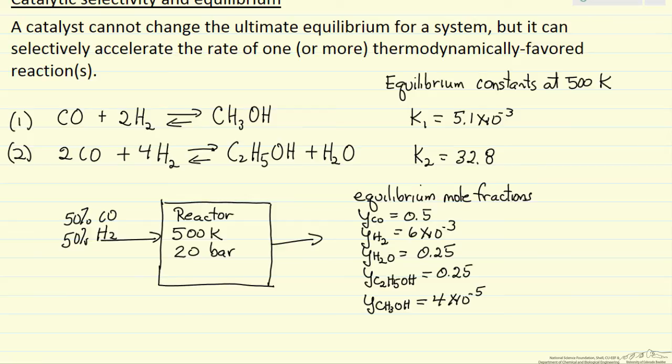If we carry out the reaction that went to equilibrium, what's the composition leaving? You'll see that most of the hydrogen has reacted because of the equilibrium constant of the second reaction and because of the stoichiometry, half of the CO is reacted essentially. The important thing to notice is that we make almost no methanol, so the main product is ethanol, as we would expect from the equilibrium constants.